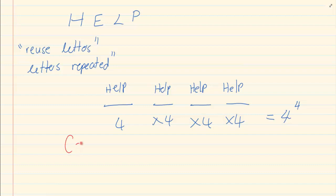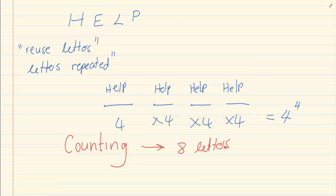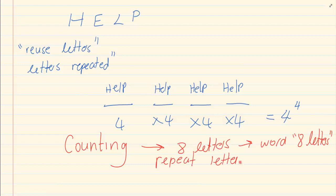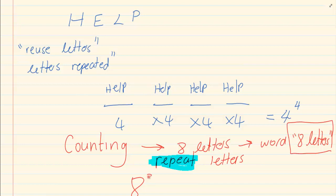Let's take another word — the word COUNTING. Counting has 8 letters. I want you to arrange words that have 8 letters, and what is important is that you can repeat the letters. You have 8 letters and I want you to make a word that has 8 letters, and you are welcome to repeat the letters. Instead of writing 8 lines doing 8 times 8 times 8 times 8, we know the answer is going to be 8 to the power of 8.